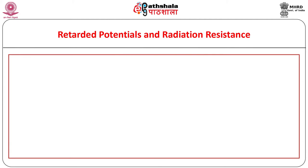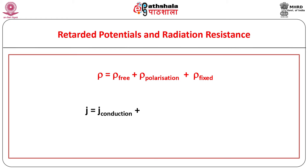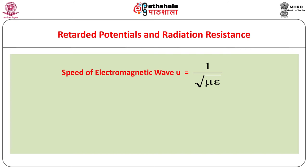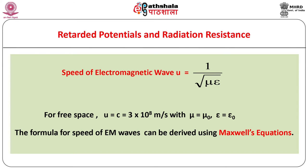The charge density rho in general consists of three parts: free charge density, polarization charge density, and fixed charge density. Similarly, the current density j comprises three types: free or conduction current density, polarization current density, and magnetization current density. Besides conductivity, the medium is characterized by two electromagnetic properties — electric permittivity epsilon and magnetic permeability mu — which determine the speed of propagation of electromagnetic waves in the medium.